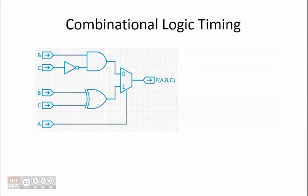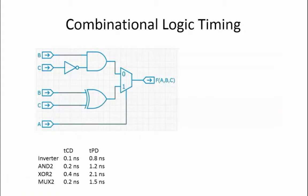We are given the combinational circuit shown here, consisting of an inverter, an AND gate, an exclusive OR gate, and a multiplexer. We are also provided with the contamination and propagation delays for each of the components in the circuit.